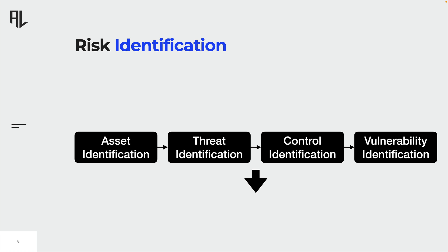Let's take a closer look at an example. Imagine there's an organization situated on Hawaii and it operates a data center. A data center is undoubtedly an asset, not just in terms of information security, but also financially. However, it's important to protect the data within the data center in terms of confidentiality, integrity, and availability — we know this as the CIA triad.